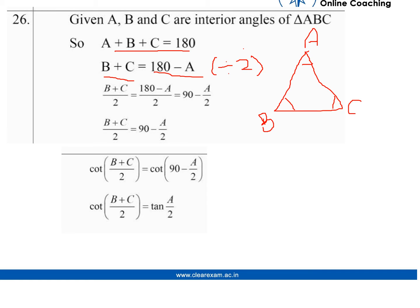Therefore, we get B plus C by 2 equal to 180 minus A by 2, and we can write this part separately, 180 by 2 minus A by 2, and 180 by 2 is 90 minus A by 2.